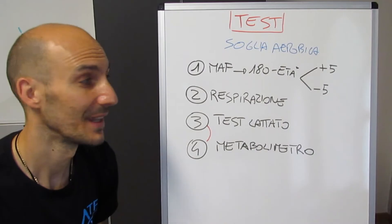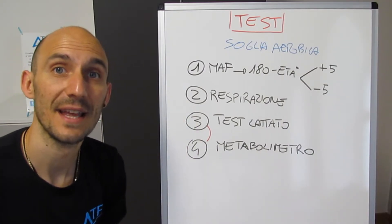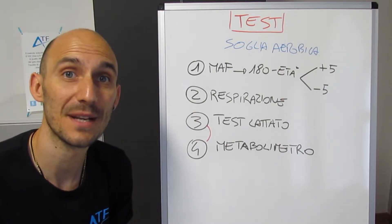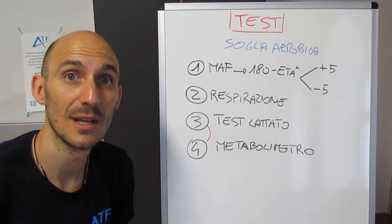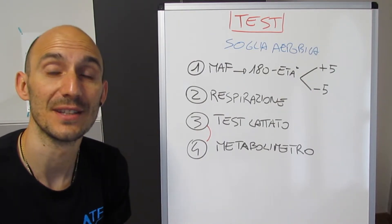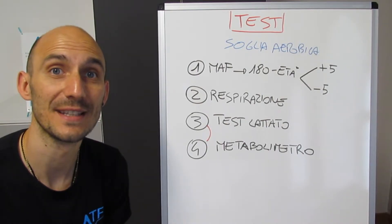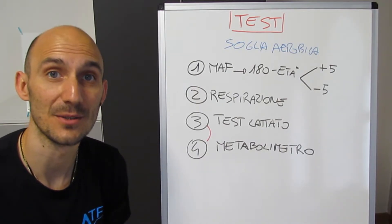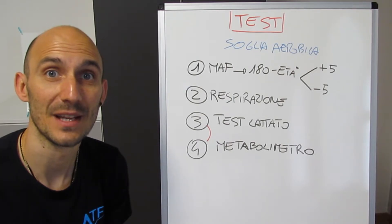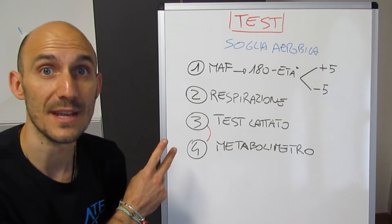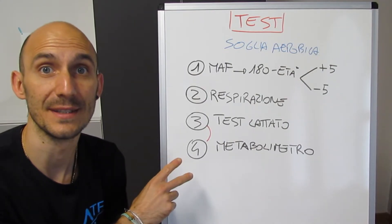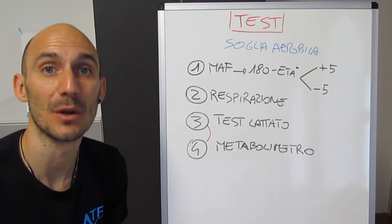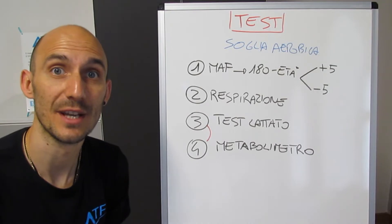Mentre chi si sta allenando abbastanza regolarmente da un paio di stagioni dovrà aggiungerne 5 al risultato. Un secondo test che potete fare è quello di verificare la vostra velocità e i vostri battiti alla quale riuscite a correre respirando solo con il naso, a bocca chiusa. Ci sono dei vari libri che insegnano come utilizzare la respirazione nasale per migliorare la performance. Questi sono due esempi meno accessibili e due esempi un po' meno attendibili però che tutti possono fare per individuare la soglia aerobica.